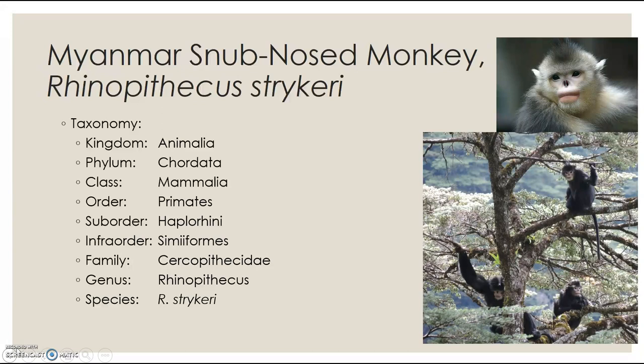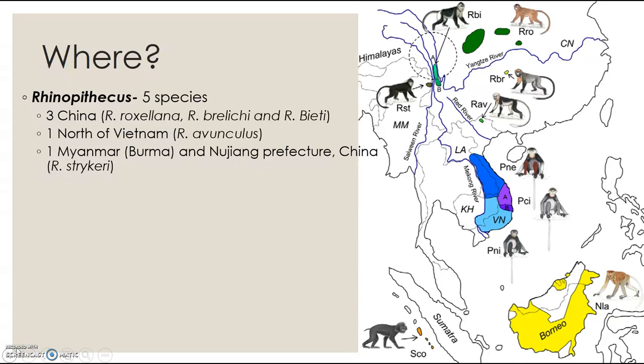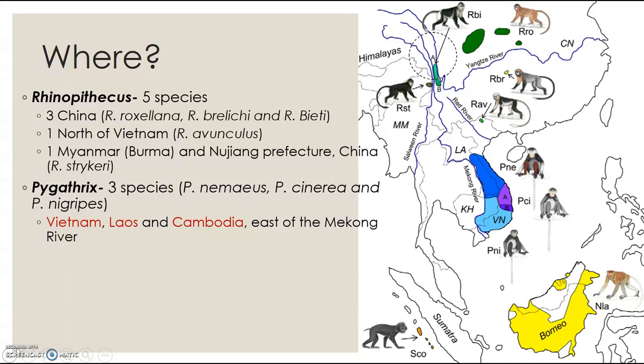As for where the monkeys are found: for Rhinopithecus, there are five species found in China, Vietnam, and Myanmar. For Pygathrix, three species are found in Vietnam, Laos, and Cambodia. Nasalis is endemic to Borneo, and Simias is endemic to the Mentawai Islands.